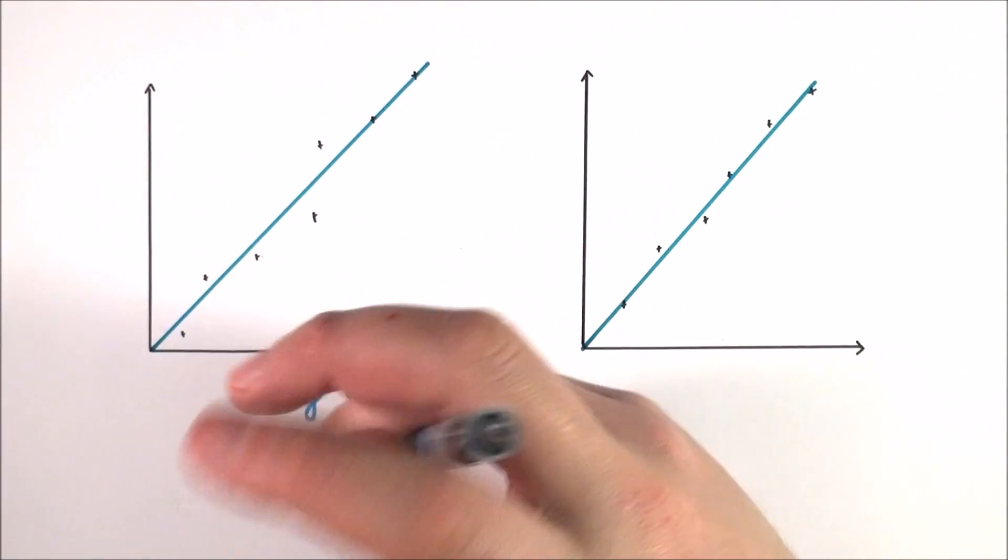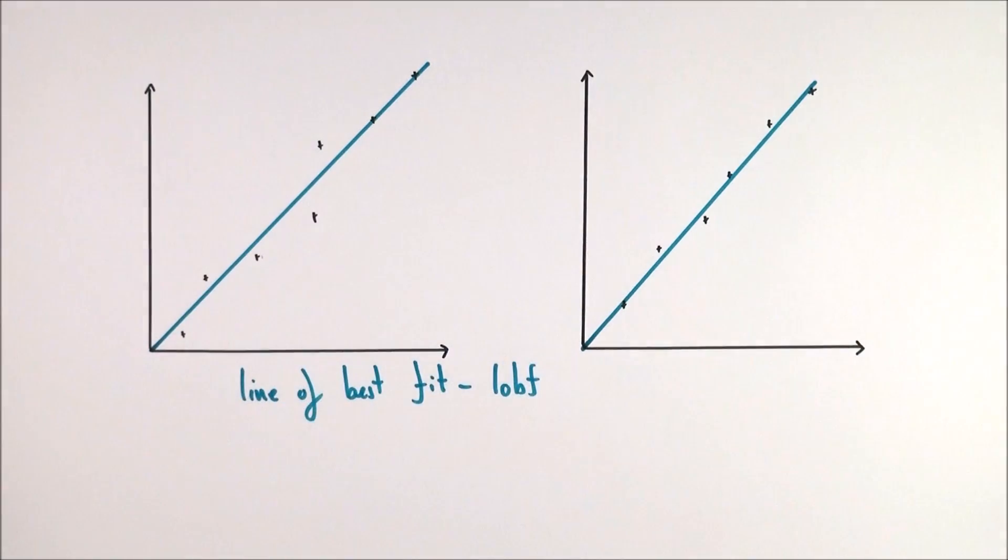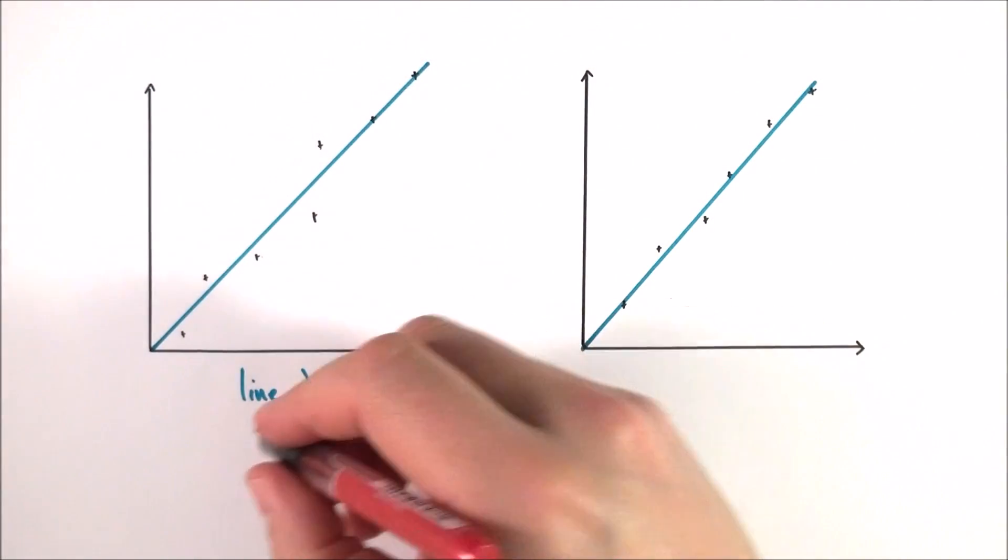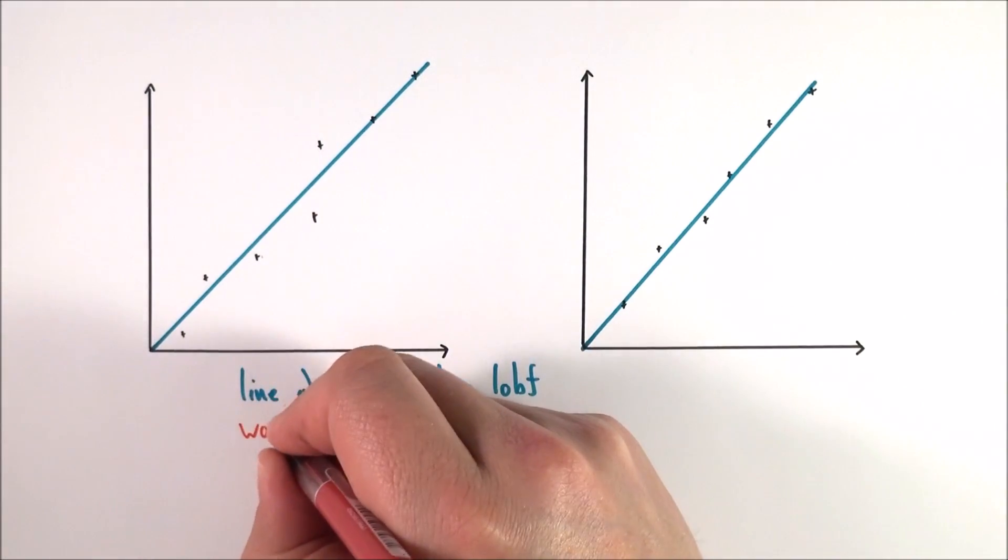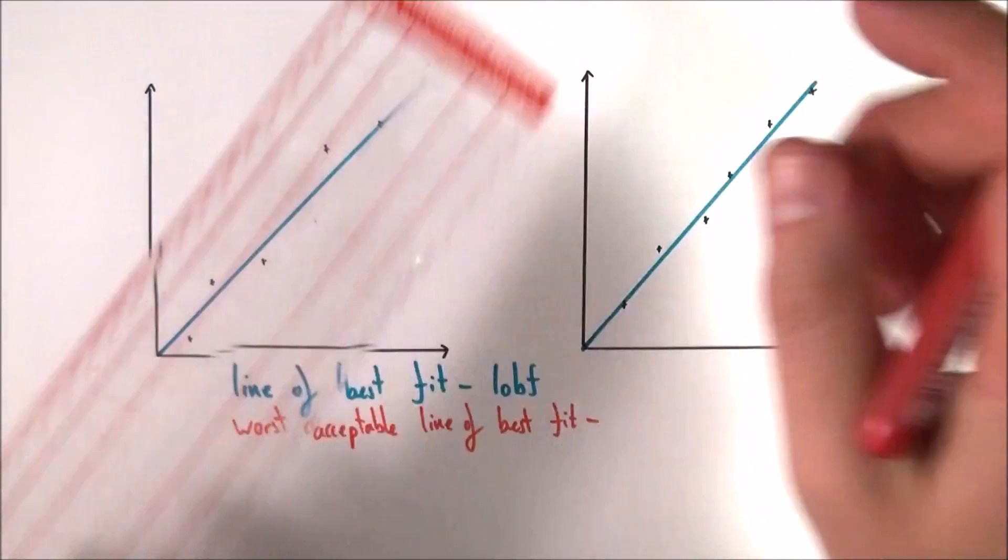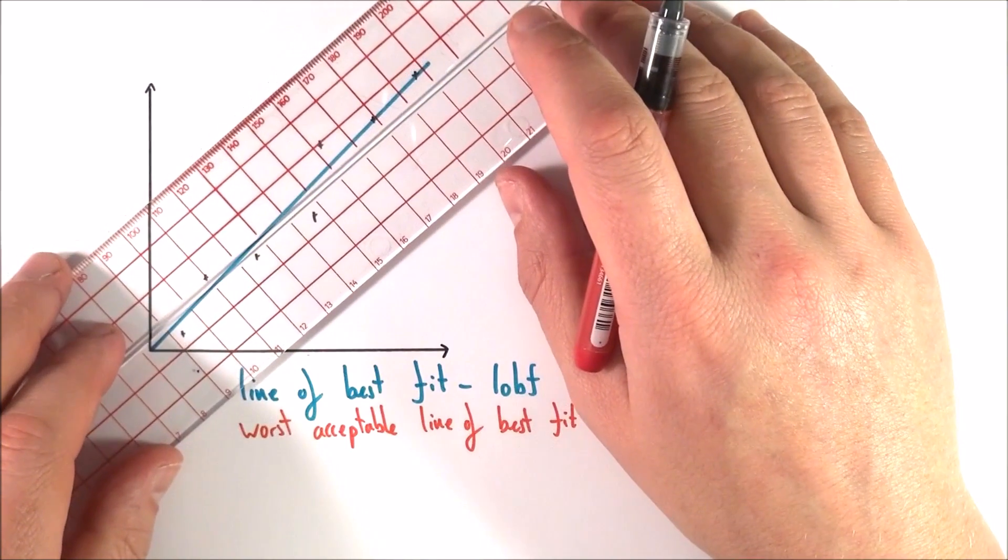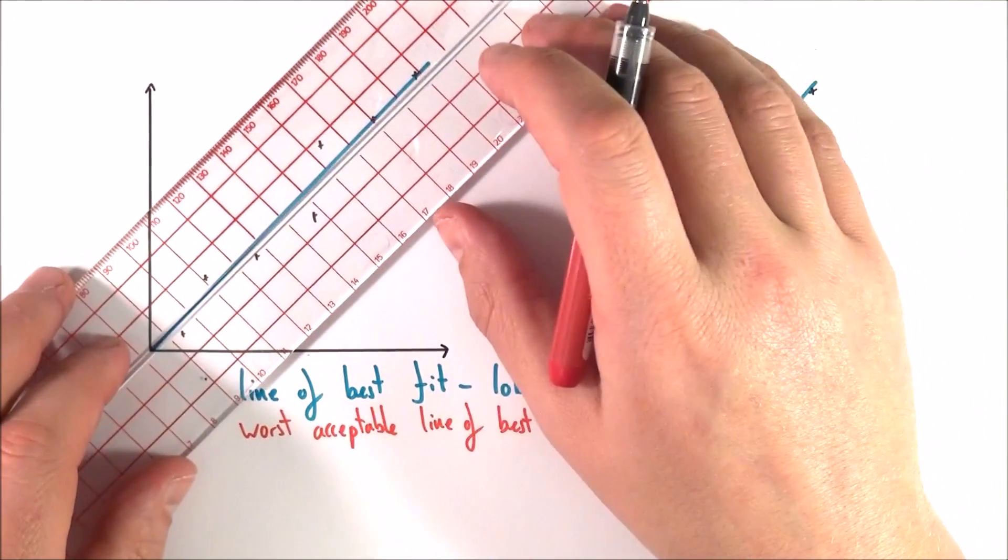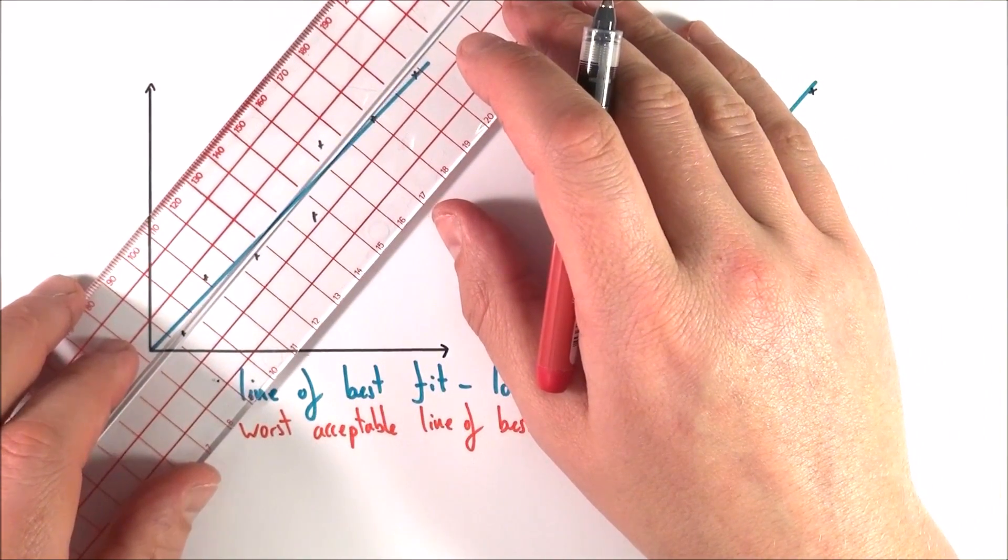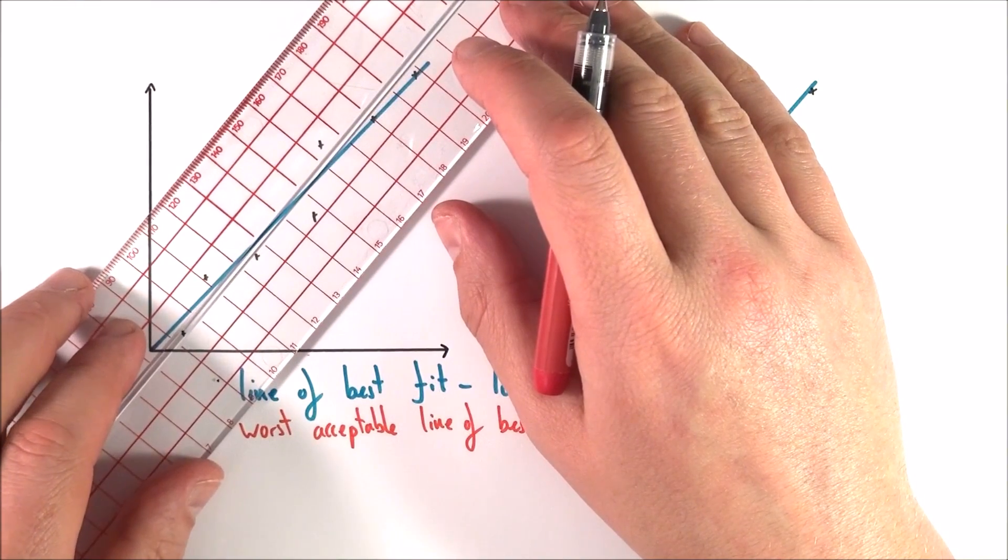But what we can do is we can actually quantify that uncertainty, because what we can also do is add what we call a worst acceptable line of best fit. So when I look at the data here, there's so many possible combinations where I could maybe put that line, and this is something which is still a line of best fit but it's kind of what's the worst you could get away with.